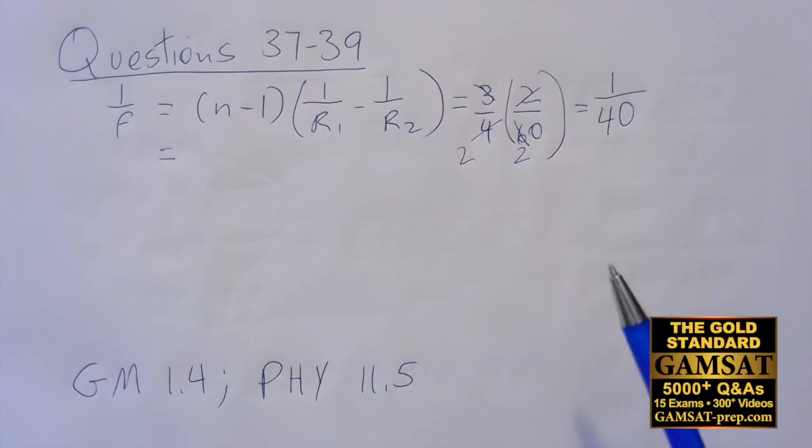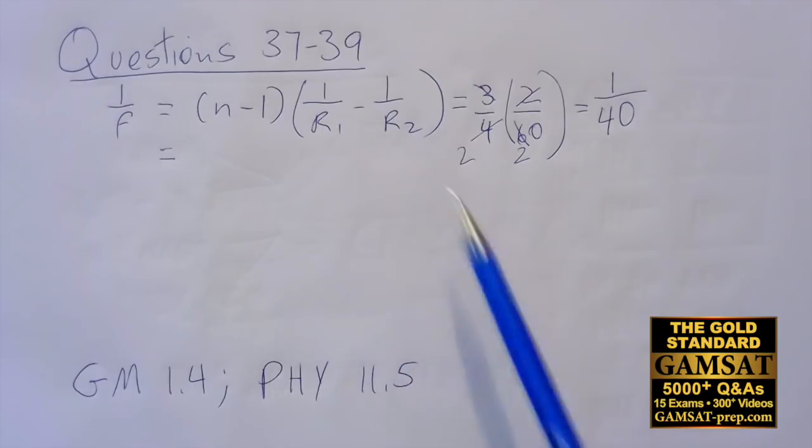Therefore f is equal to 40. F is clearly equal to 40 and that is in centimeters, so f is 40 centimeters. It's also clearly positive because this was a convex lens and also because we worked it out and it was positive. So the answer to 37 is B. By the way, we're working in centimeters, there's no need to convert to meters because everything's in centimeters. Had it been otherwise then you would have to convert into SI units.